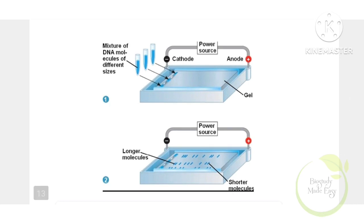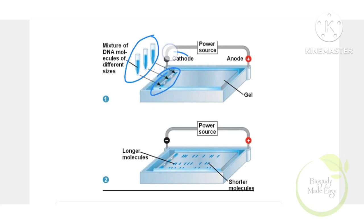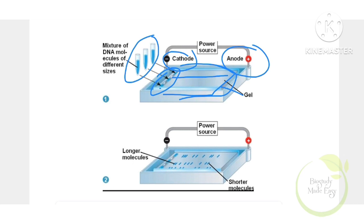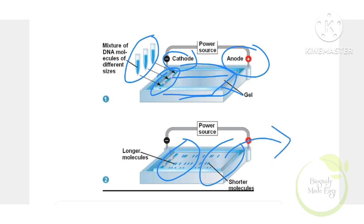In the diagram: mixtures of DNA molecules of different sizes are loaded into wells. The cathode is negatively charged. DNA fragments move toward the anode, which is the positively charged electrode. Longer molecules move shorter distances while shorter molecules move farther. The separated DNA bands are then cut and extracted from the gel — that is elution — to produce recombinant DNA.